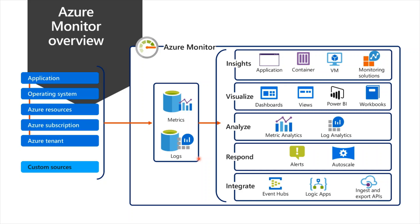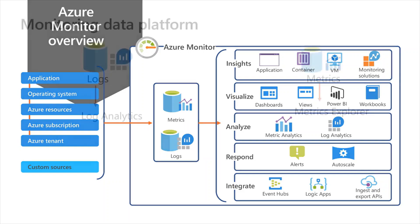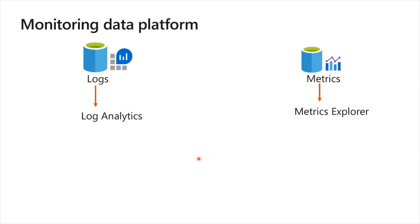At the center of the Azure Monitor diagram are the data stores for metrics and logs, which are the two fundamental types of data used by Azure Monitor. On the left are the sources of monitoring data that populate these stores; on the right are the functions Azure Monitor performs with this collected data, such as analysis, alerting, and streaming to external systems. The monitoring data platform consists of logs, metrics, Log Analytics, and Metrics Explorer.